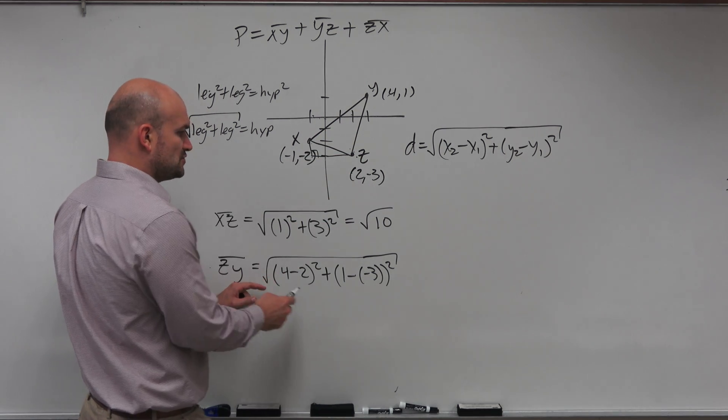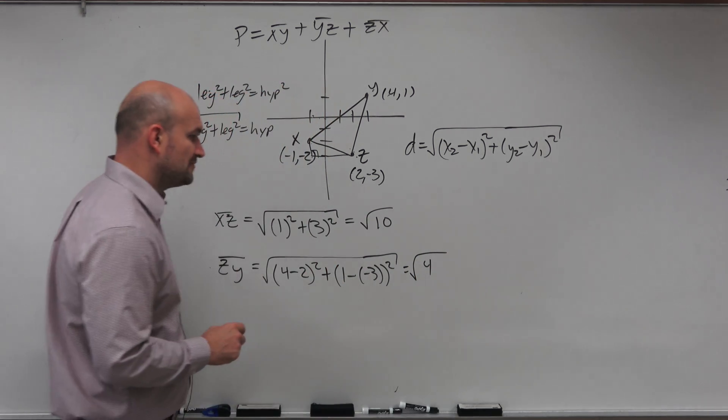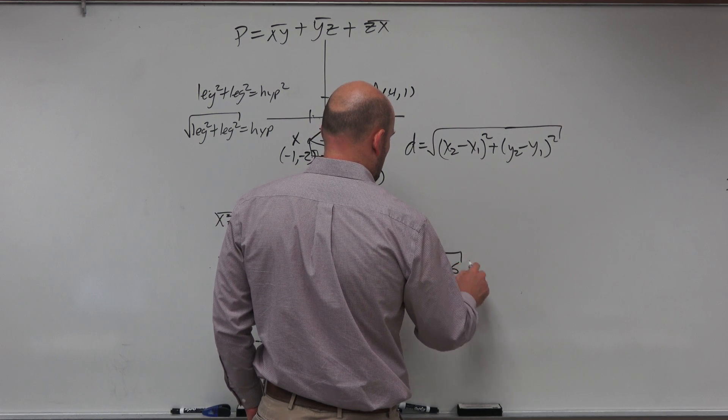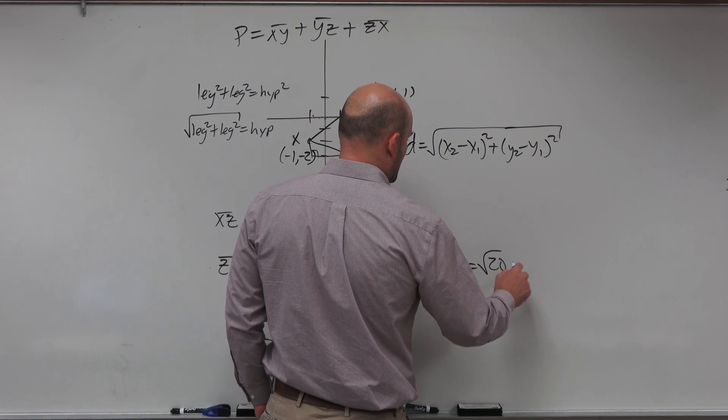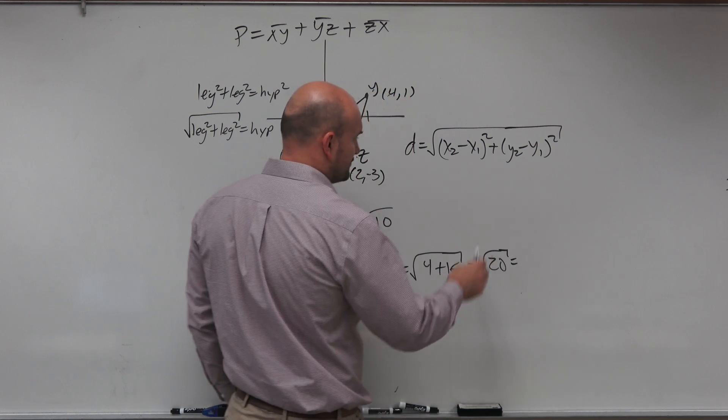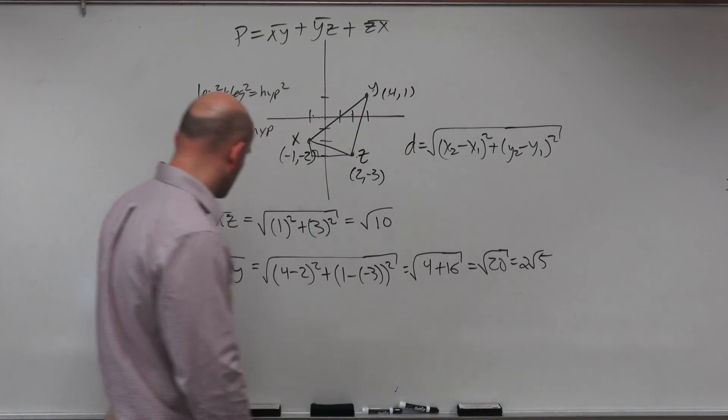It's minus a negative 3. So 4 minus 2 is 2. 2 squared is 4. And 1 minus a negative 3 is 4. 4 squared is going to be 16. And therefore, that's going to equal the square root of 20, which you could go ahead and simplify to give you, we could go ahead and further simplify that to give you 2 radical 5. All right.